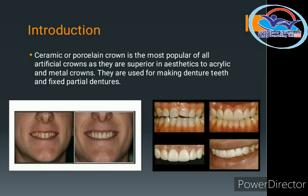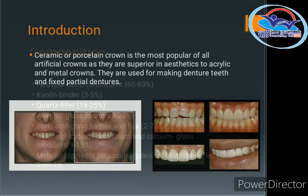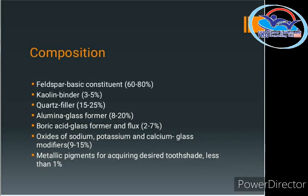We will discuss the composition of dental ceramics. The main constituents are Feldspar, Quartz, Kaolin, and more. In terms of percentage, we will discuss: Feldspar 60-80%, Kaolin 3-5%, Quartz 15-25%, Alumina 8-20%, and Boric Acid 2-7%.